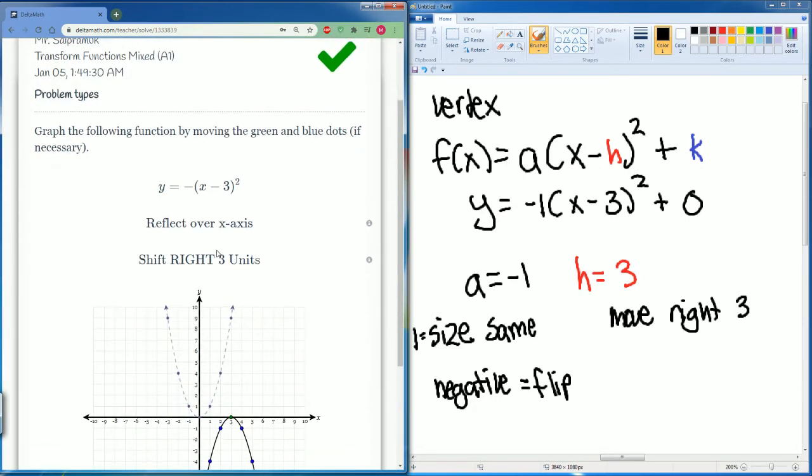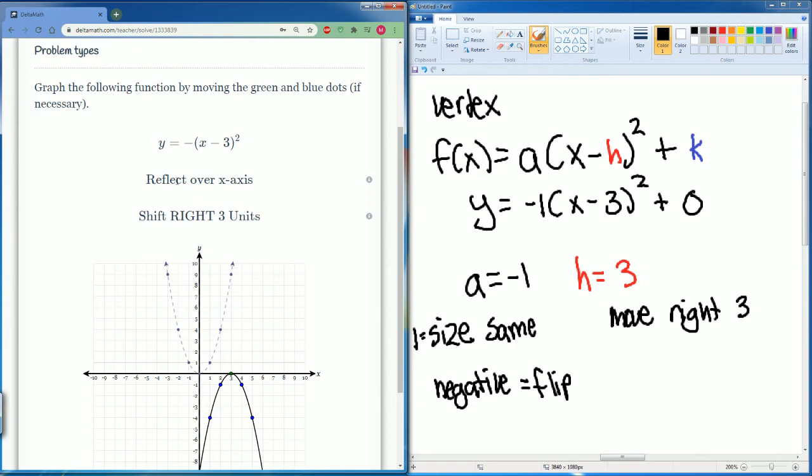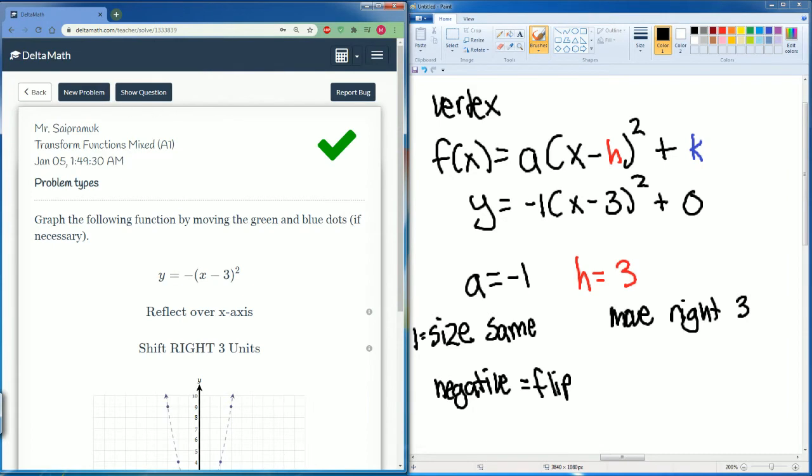There you go. So notice that we reflected over the x-axis because that is your negative. And then the size does not change because it is a 1. Then we shift right 3 because of the h equals to 3. Let's do the next problem.